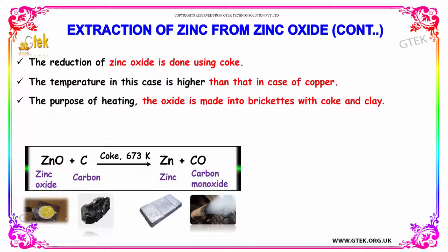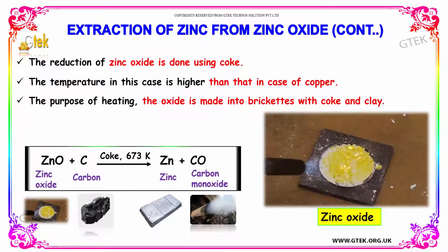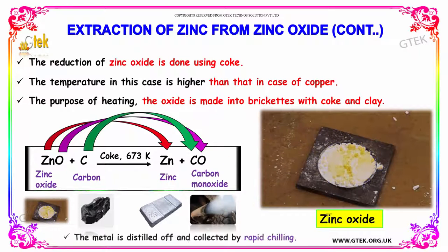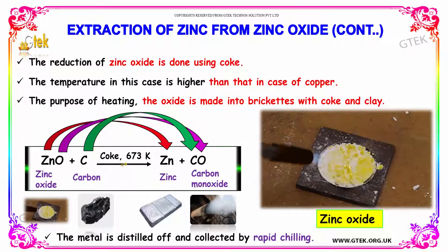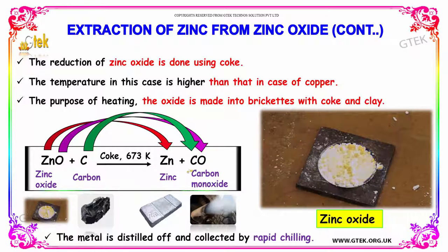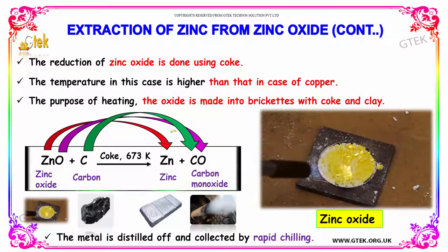Extraction of zinc from zinc oxide. The reduction of zinc oxide is done using coke. The temperature in this case is higher than that in case of copper. The oxide is made into briquettes with coke and clay. The metal is distilled off and collected by rapid chilling. That's how you are able to extract zinc from zinc oxide.